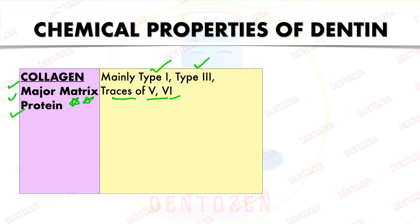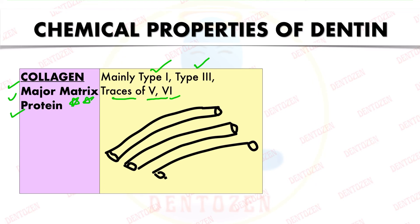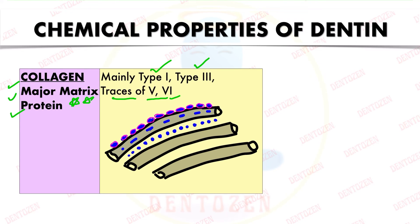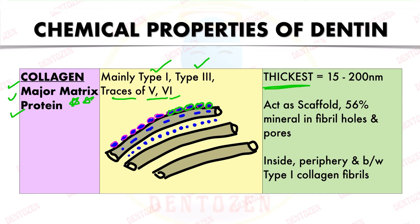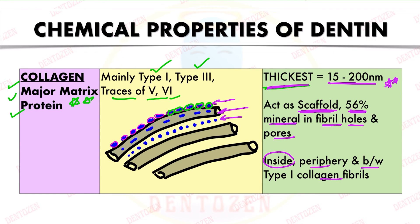The role of collagen is to provide a framework for mineral deposition. Collagen fibrils have pores and holes within which mineral is deposited — on the periphery of fibrils, inside fibrils, or between two fibrils. These collagen fibers in dentine are among the thickest of all dental tissues, ranging from 15 to 200 nm. About 56% of the mineral is found in the fibril holes and pores.